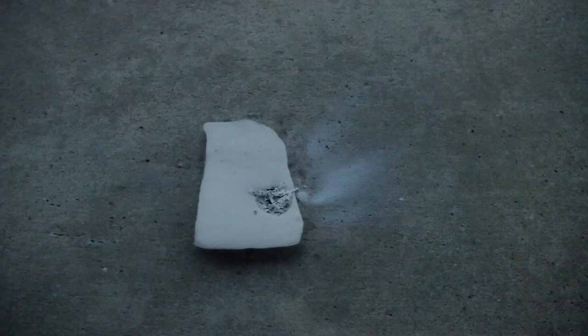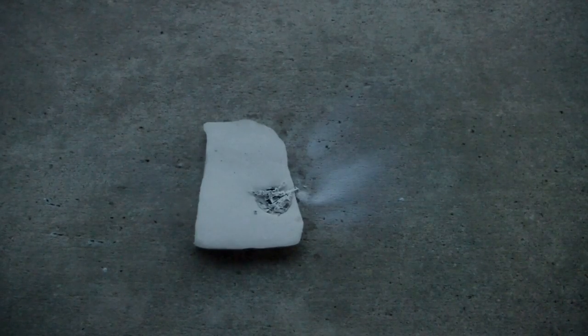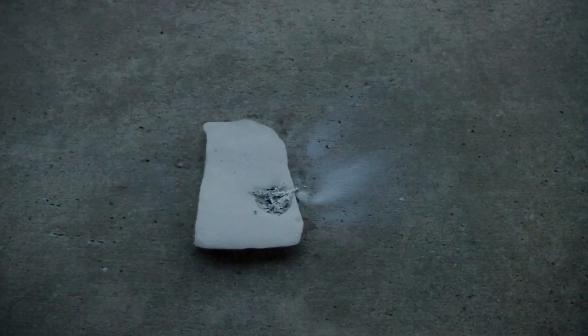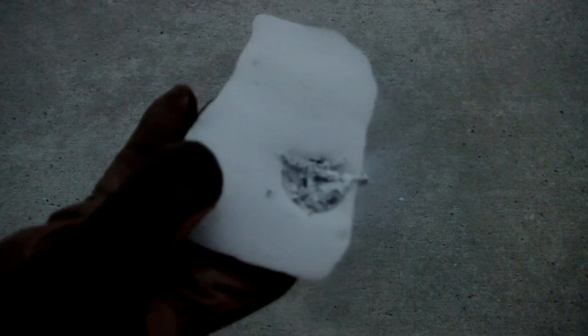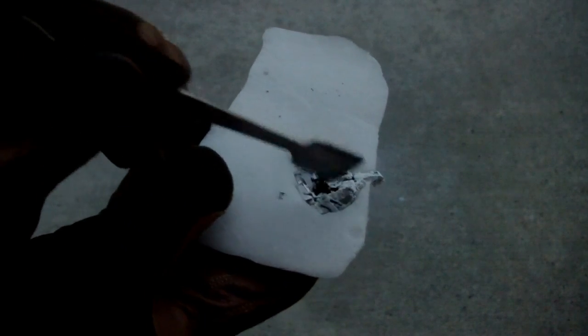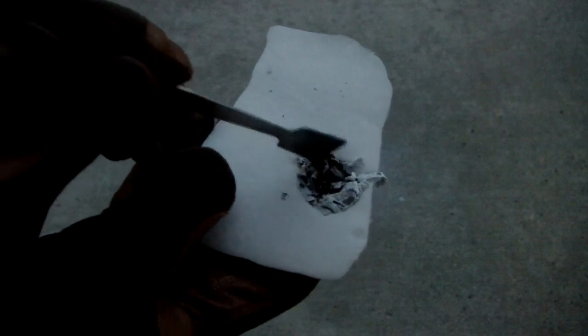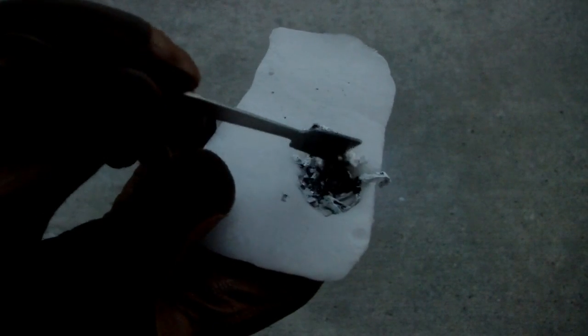You can see now when I take this off, the products of the reaction are bits of white and bits of black. And that's because—I'll bring it a little closer to the camera—that's because the products of this reaction are magnesium oxide and carbon. And so you can see the carbon buried beneath the white magnesium oxide.